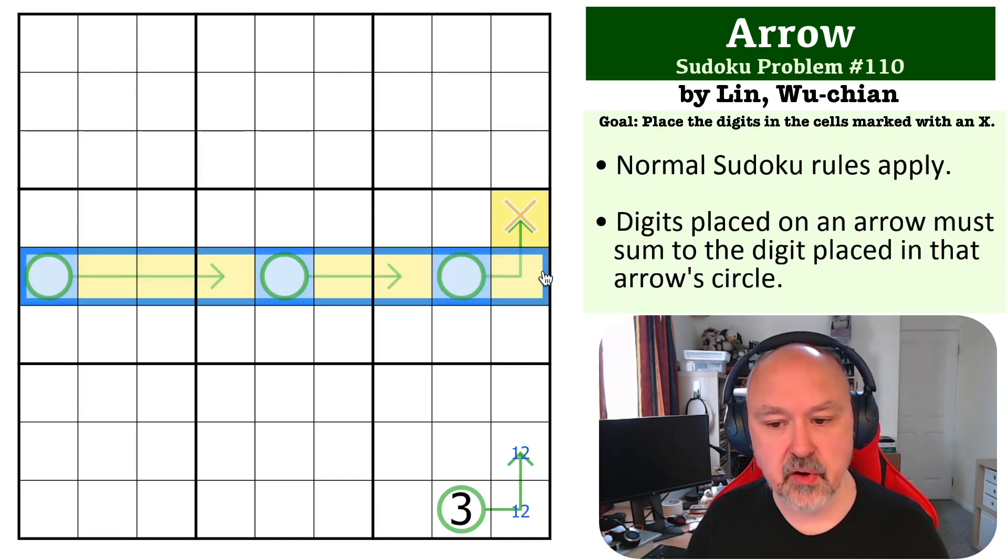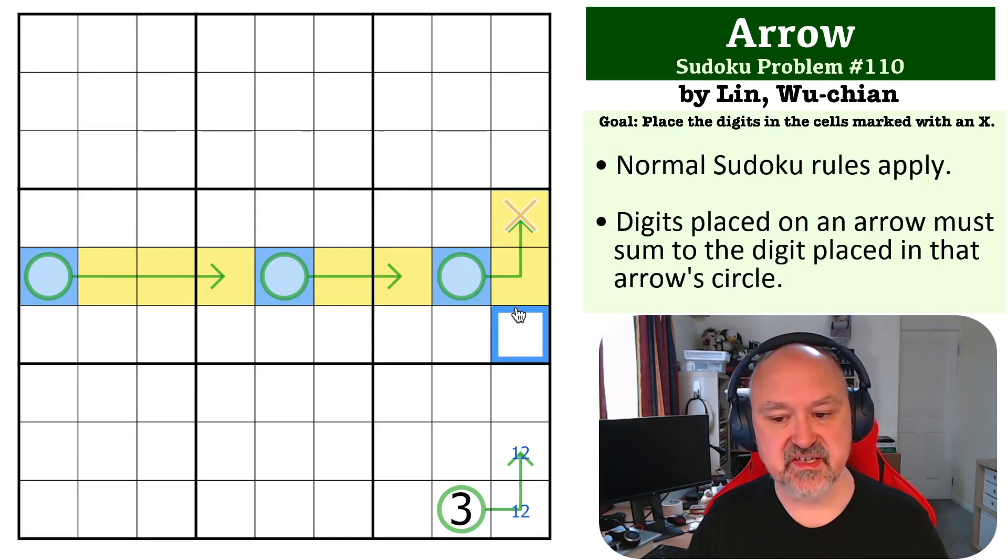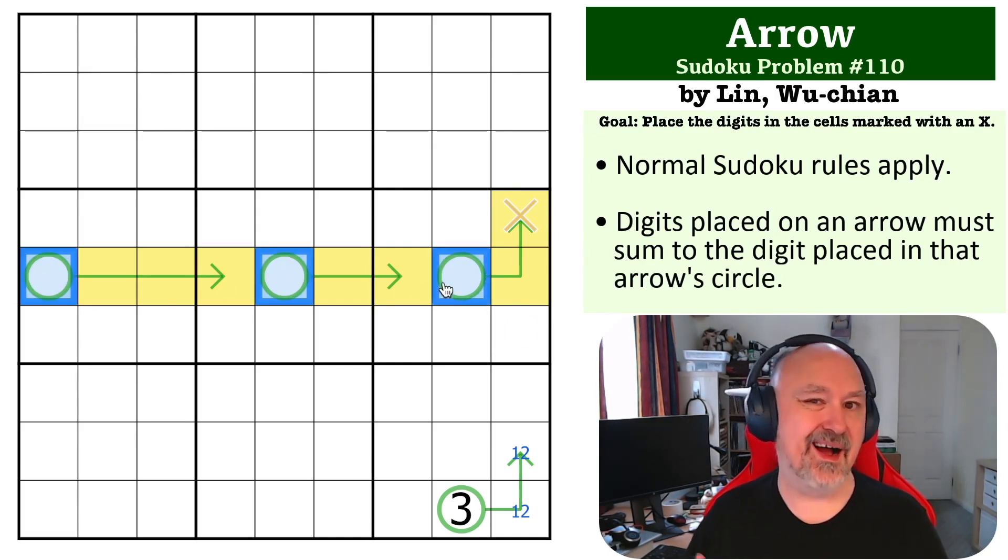Now, because we know an entire row of a Sudoku must sum to 45, and we've got an extra cell, yellow plus blue must sum to greater than 45. So these three cells must be greater than half of 45. Now, half of 45 is 42 and a half, so they must be greater than 42 and a half.